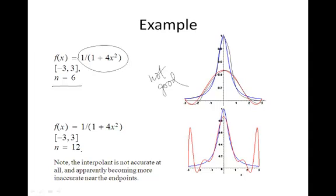When we jump up to twelve points, where you would think things would get better, the approximation apparently becomes worse. Although it's a little better in this range, toward the end points, the approximation is becoming very inaccurate. And this often happens to these approximations. When they go bad, they go bad at the end points.